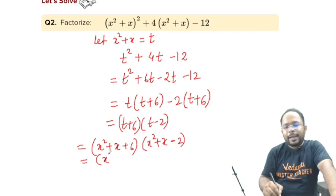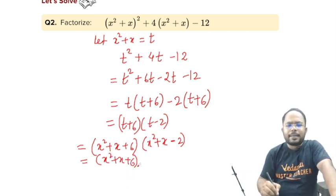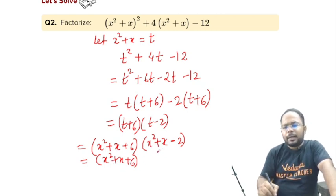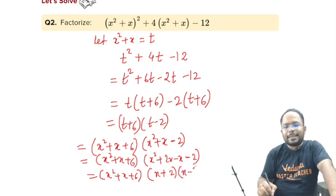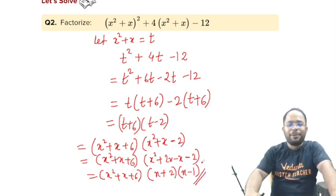We can think that x² + x + 6, can we do middle term? No. x² + x - 2, can we do middle term? Yes. We can do the middle term of it. 2x - x - 2. We will get the terms like this. (x² + x + 6)(x + 2)(x - 1). This is how we can get the answer of this. Very well done students.